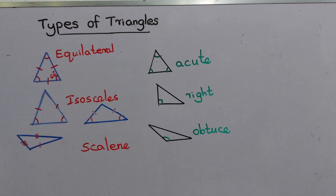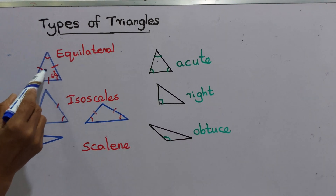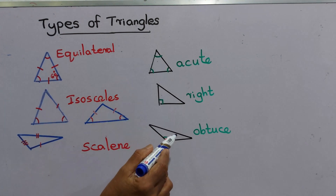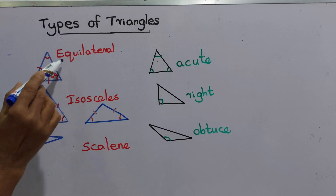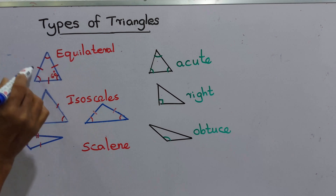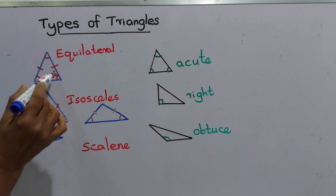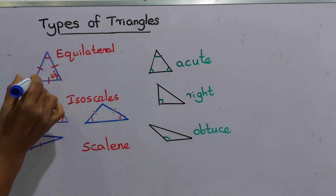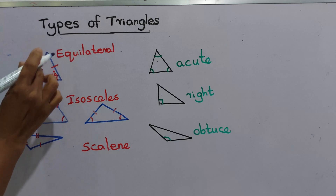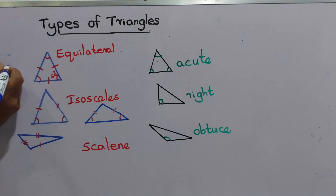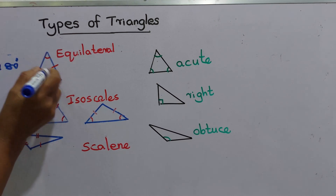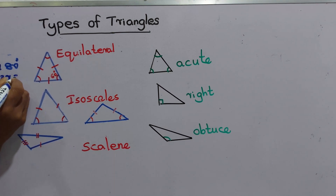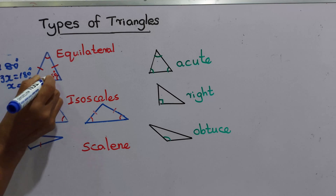Today we are going to discuss types of triangles. We can name triangles according to their sides and their angles. This triangle is named an equilateral triangle, meaning all three sides are equal. In an equilateral triangle, all three angles are also equal. Since all angles of a triangle sum to 180 degrees, three equal angles means each angle is 60 degrees.